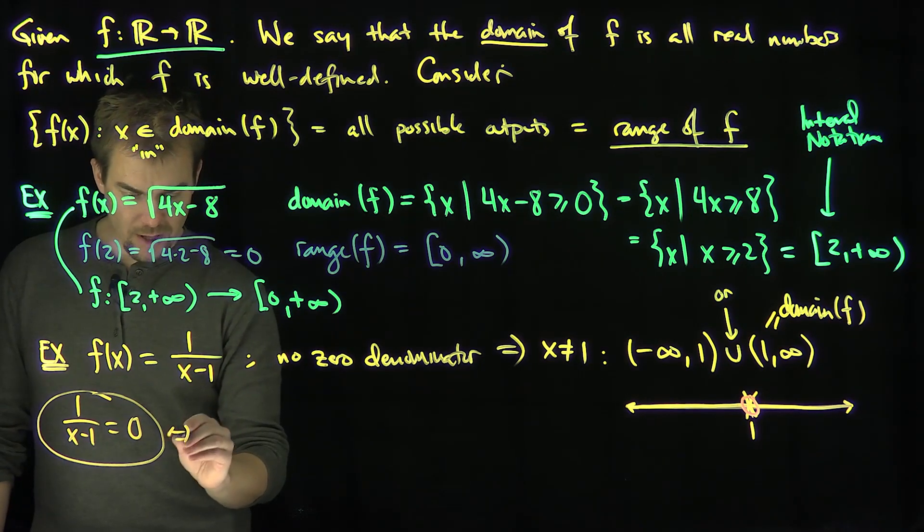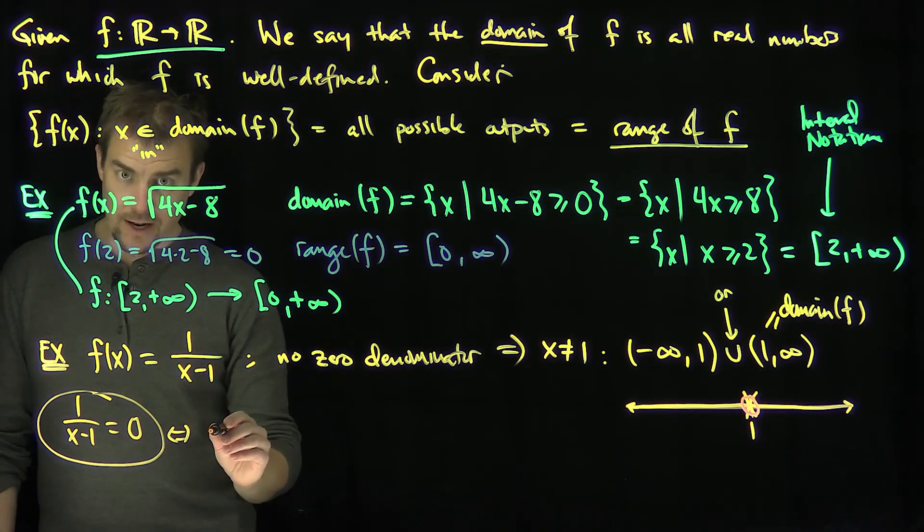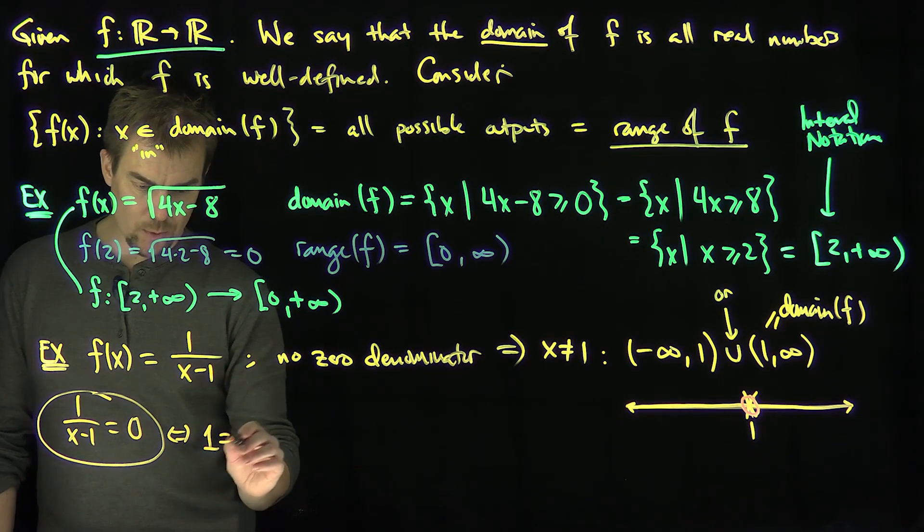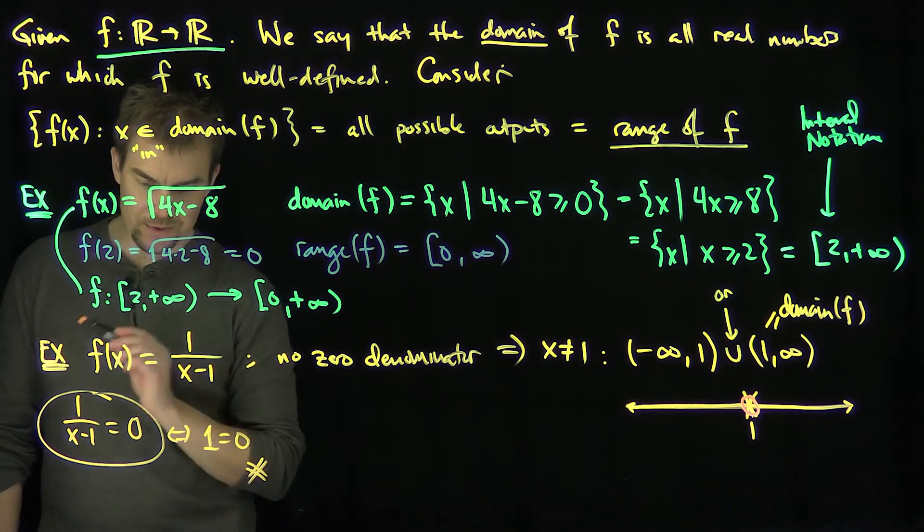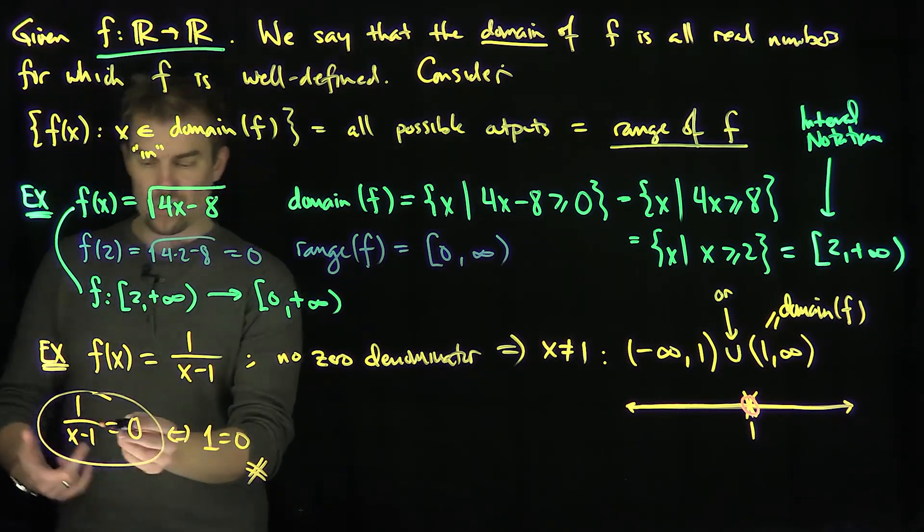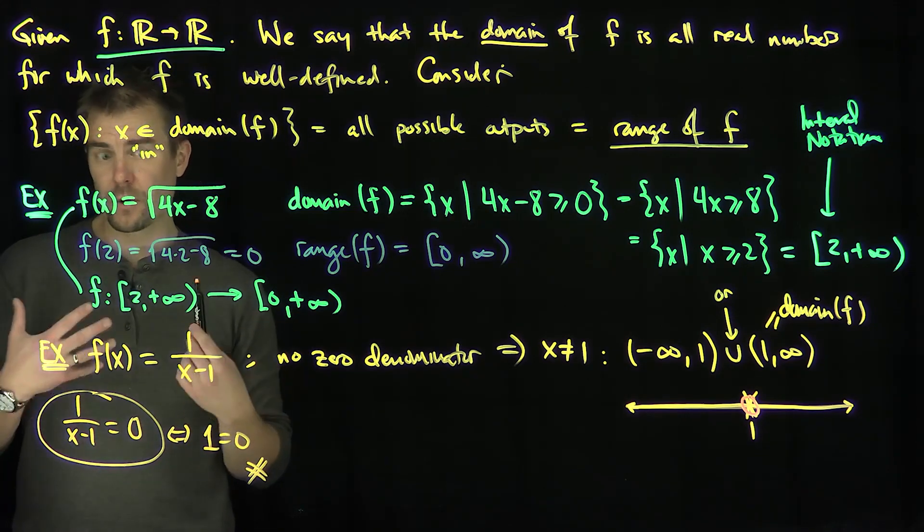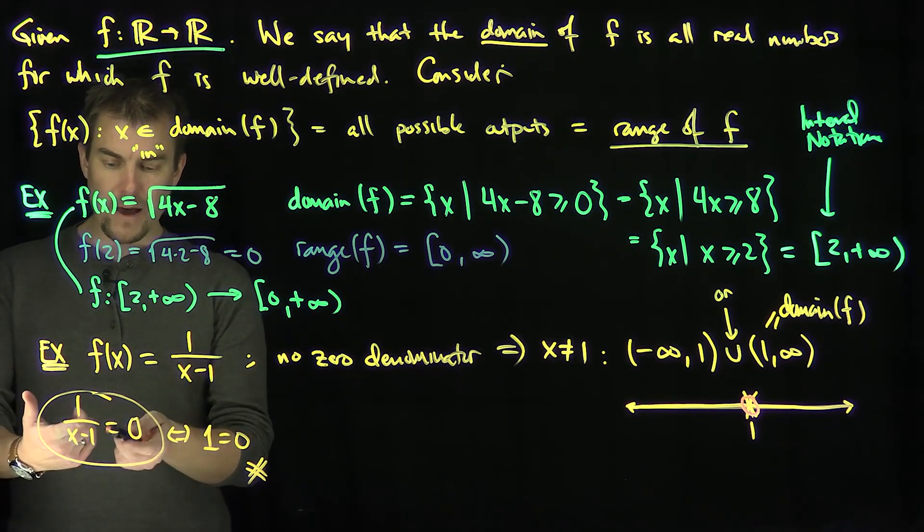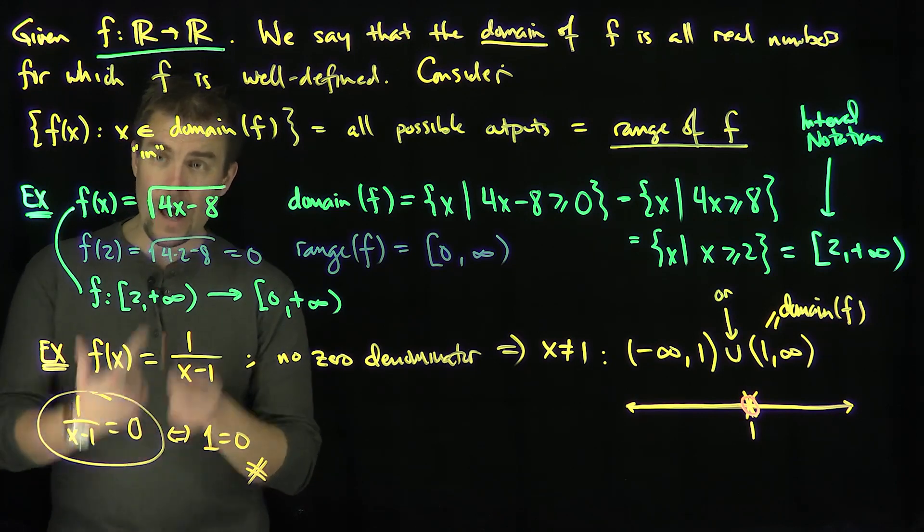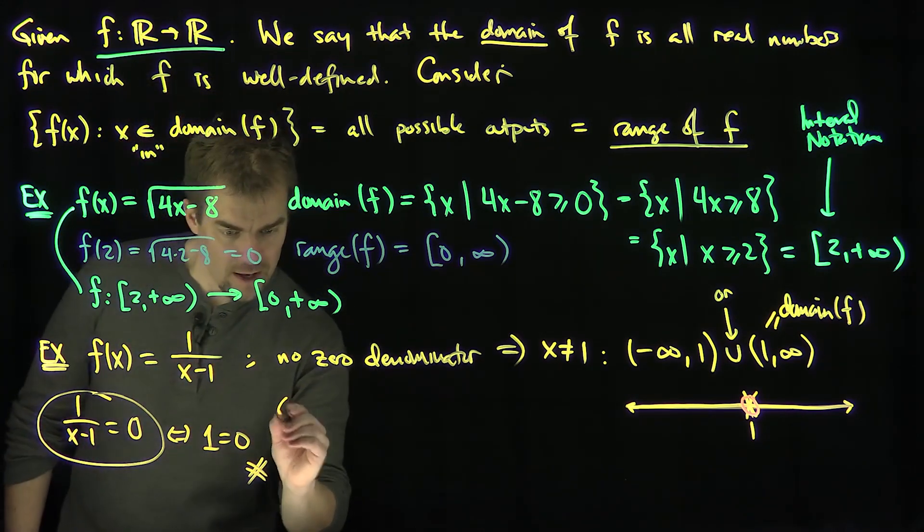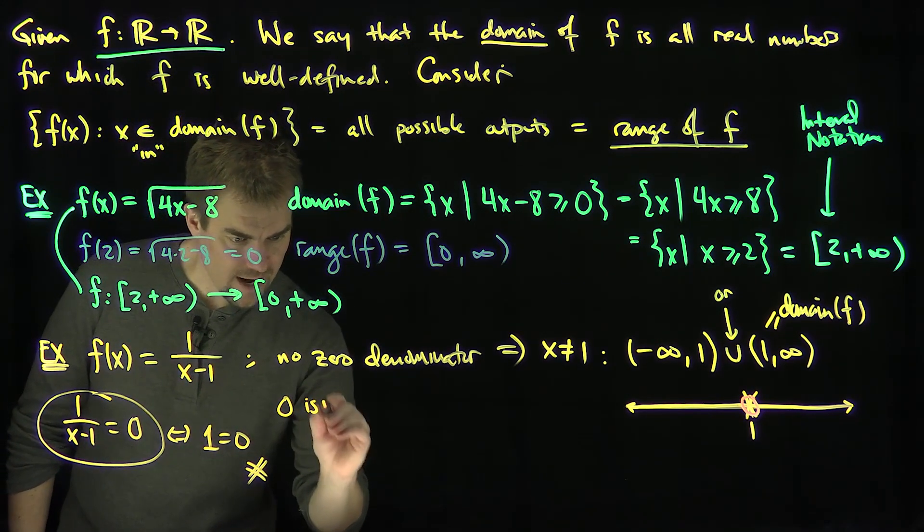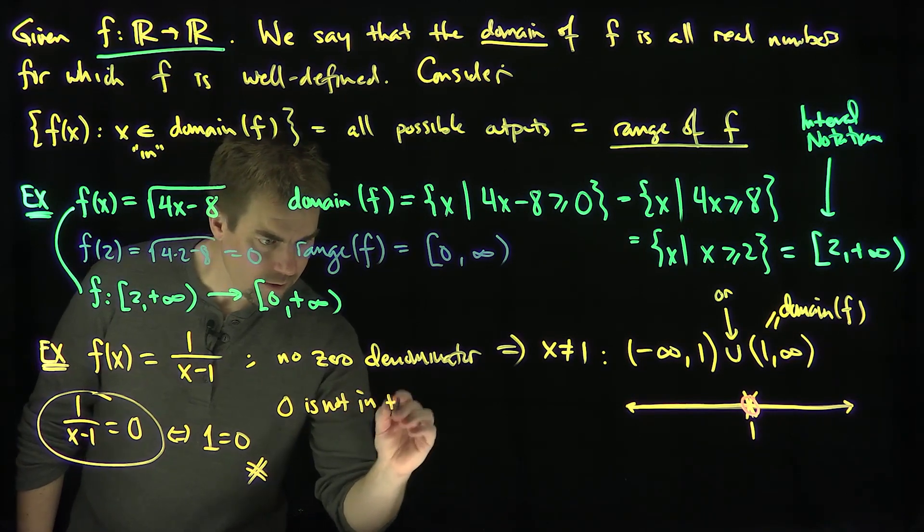I would cross multiply by x minus 1, and I would conclude that 1 is equal to 0. Which is impossible. So this equation, the circled equation is an example of an equation that has no solution. So in other words, there's no value of x that I can plug into this function that will output 0. So 0 is not in the range.